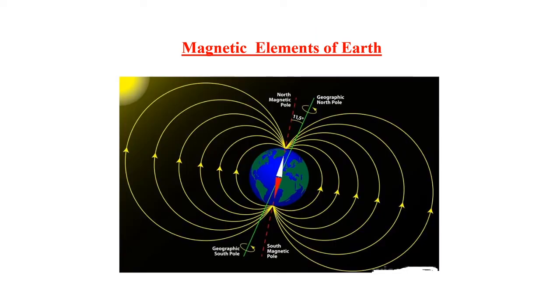Magnetic elements of earth. A hypothetical giant magnetic dipole is supposed to be located at the center of the earth. It does not coincide with the axis of earth. The dipole is tilted by 11.5 degrees with respect to the earth axis.